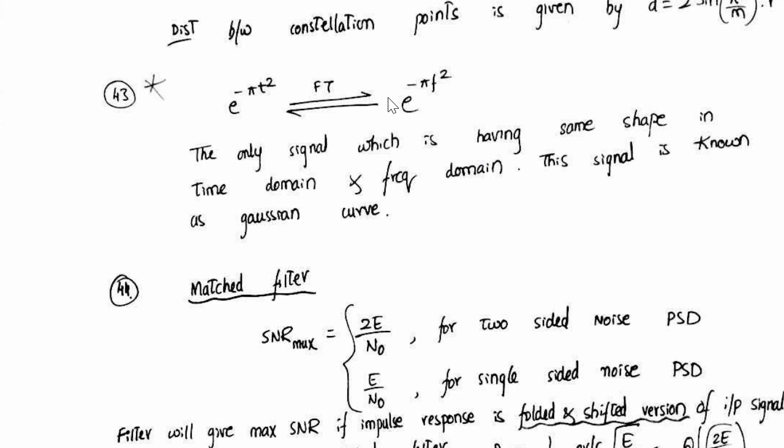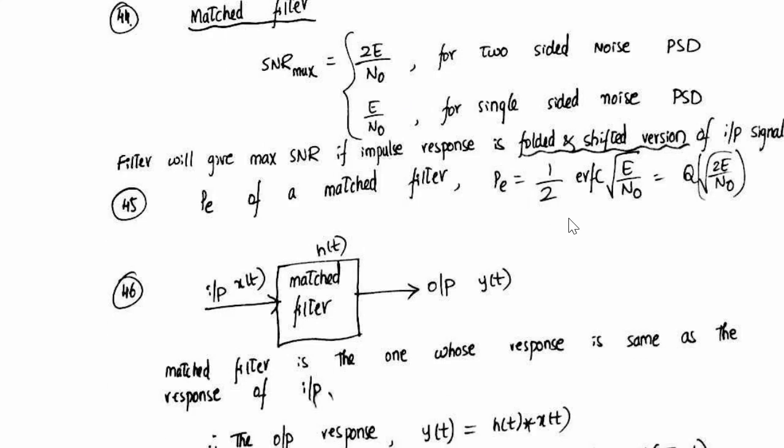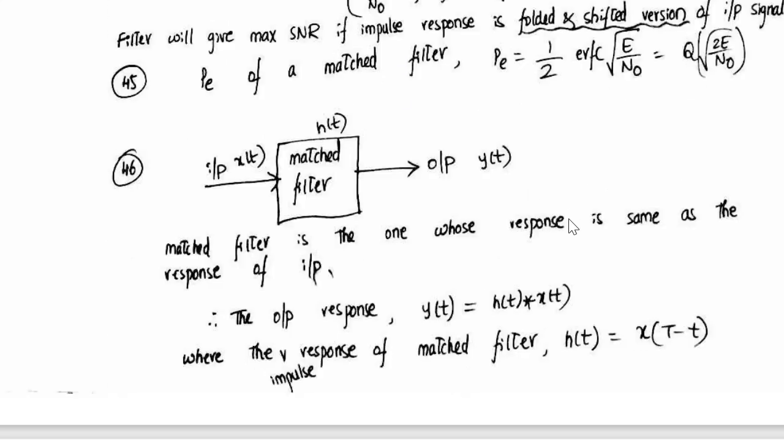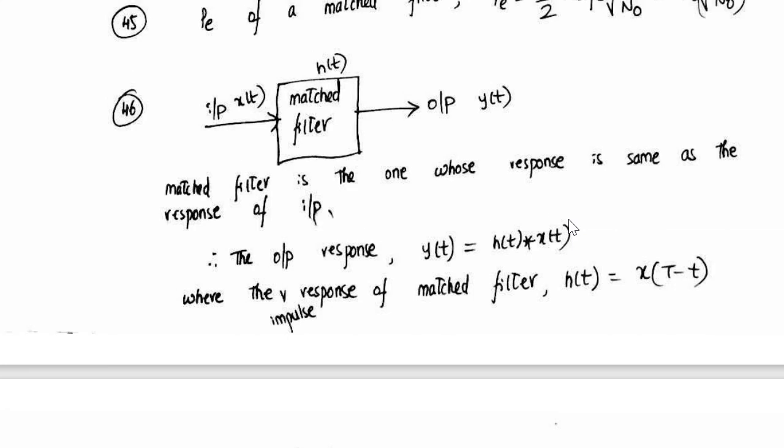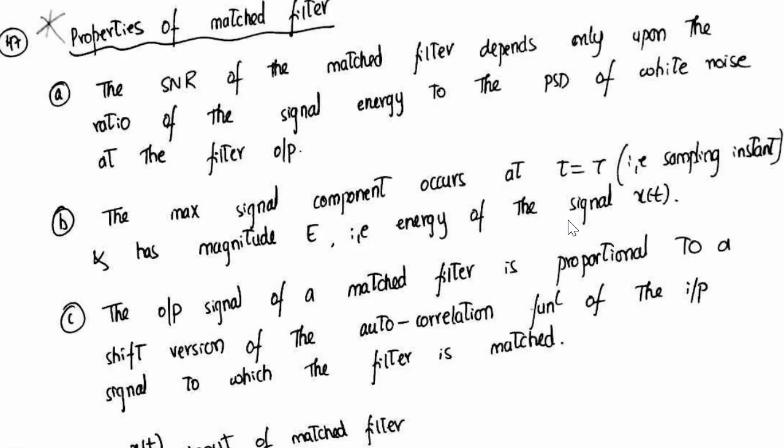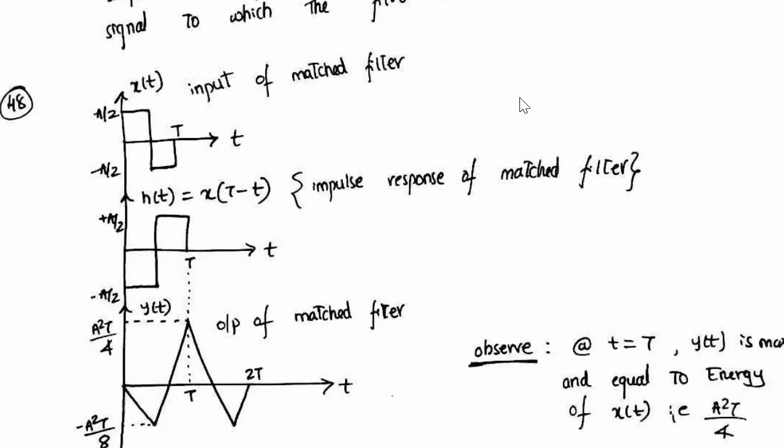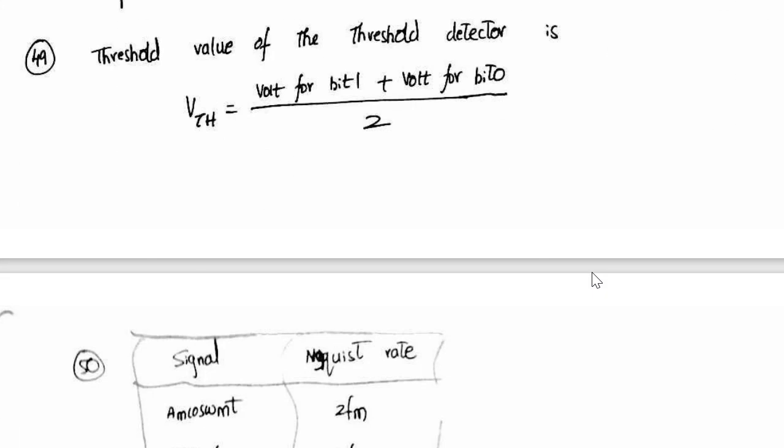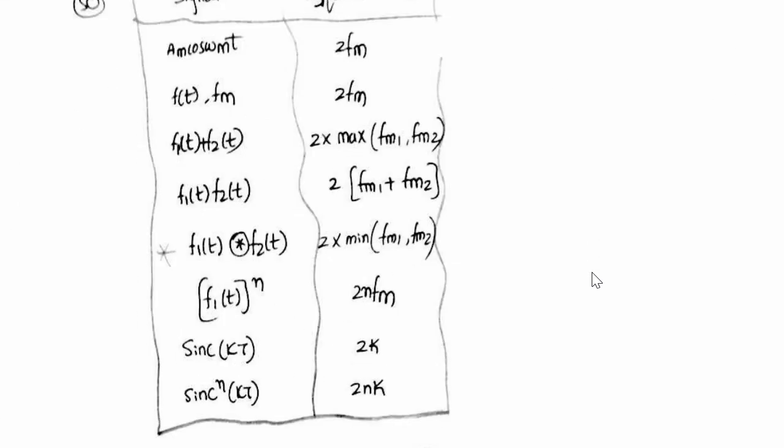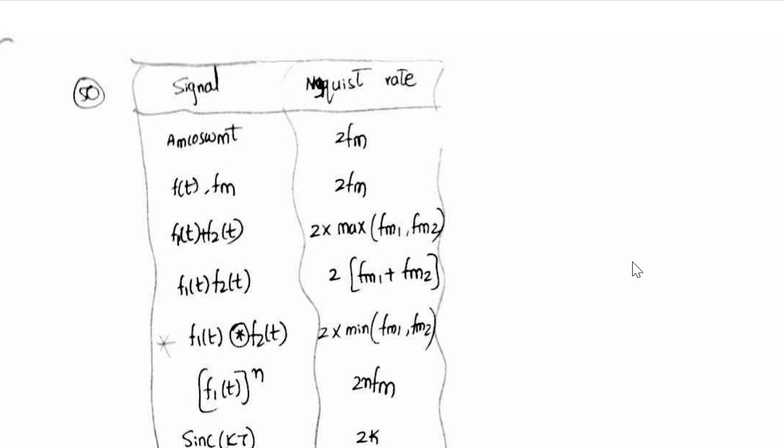So the Fourier transform of Gaussian is again a Gaussian. So a concept related to matched filter - properties are very much important. So this is an example which would ask for the output of matched filter. So this table is pretty much important to find equalization for various signal combinations.